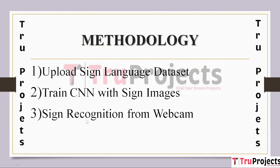To implement this project we have designed the following three modules. The first module is uploading the sign language dataset. This step involves collecting a comprehensive dataset of images containing various hand signs from sign language. Each image in the dataset corresponds to a specific sign or gesture. The dataset should cover different hand shapes, positions, and movements to ensure the model's robustness and accuracy in recognizing a wide range of signs.